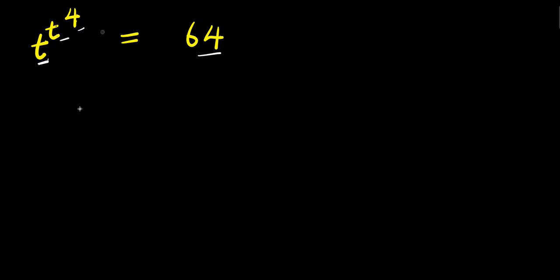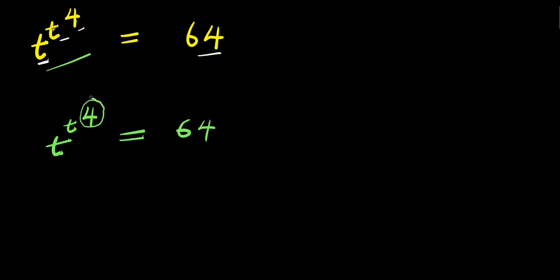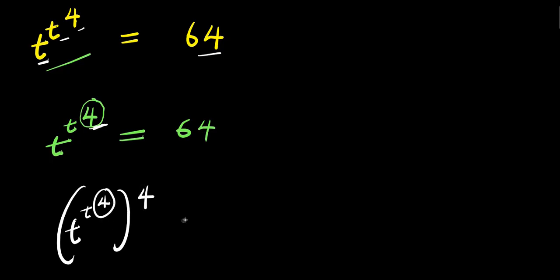We have t to the power of t to the power of 4 and this equals 64. If you observe, we have 4 here. Because of this, we can decide to raise each part of this equation to the power of 4. So we raise the left side to the power of 4, and we also raise 64 to the power of 4.